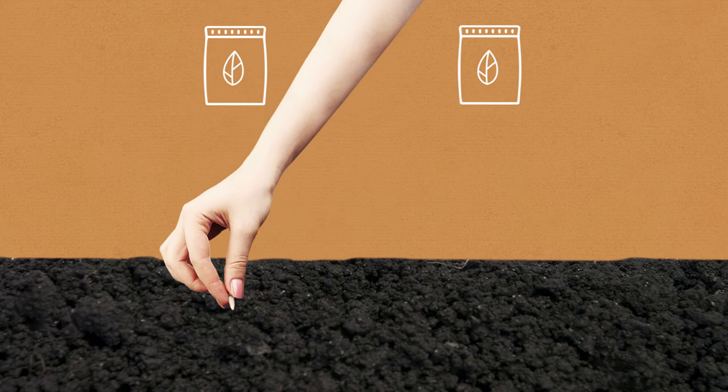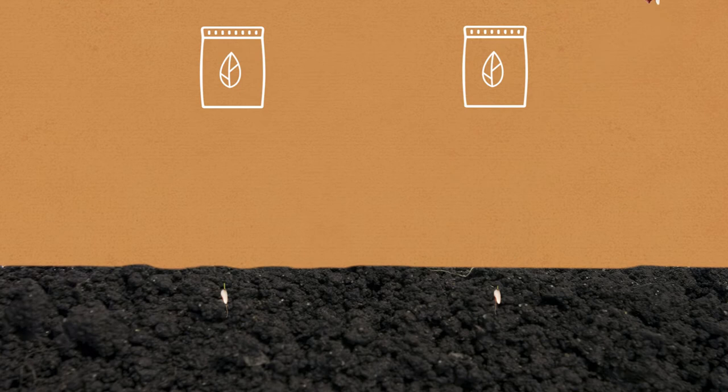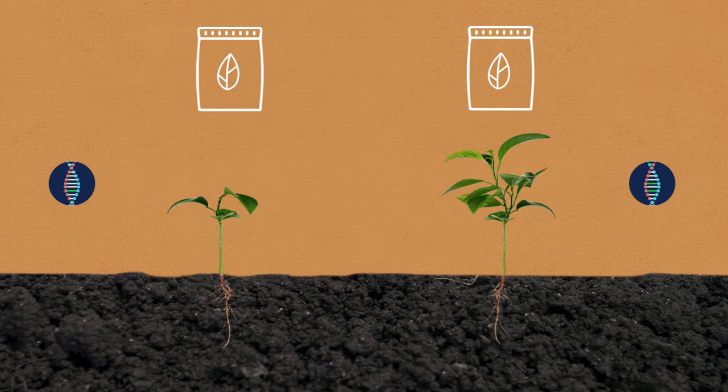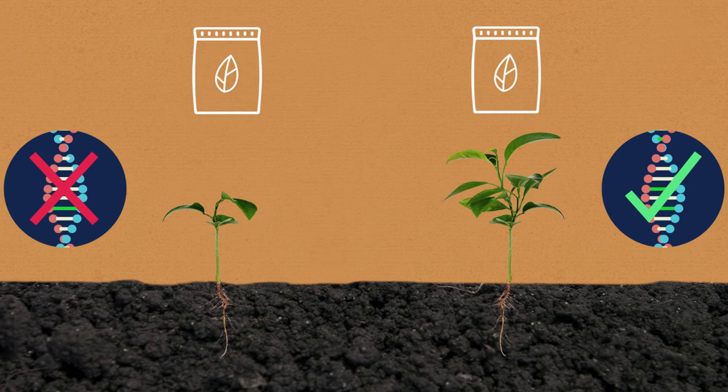Before livestock or seeds can be sold to farmers, it's important to verify that the traits aren't lost during the production process by checking they possess the appropriate trait-associated DNA variations. This quality control step involves testing a few DNA variations from very large numbers of samples.